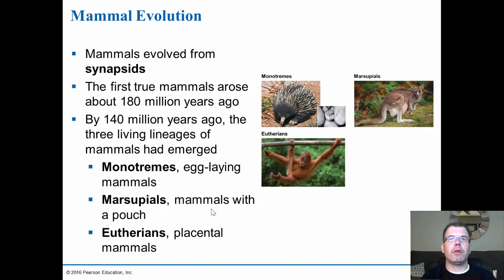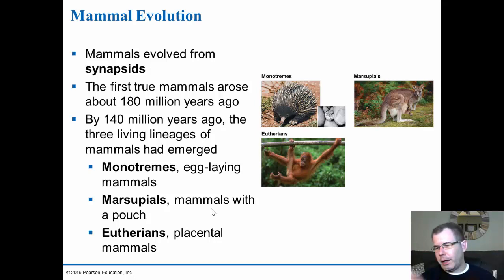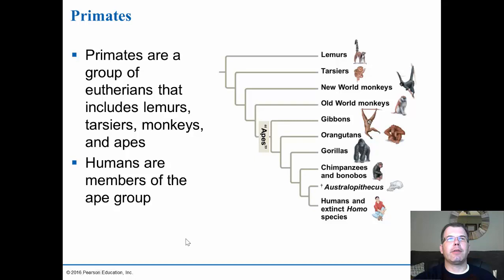Most animals are the eutherians — the placental mammals — which means they have internal fertilization, internal development, and loss of all shells altogether. It's all internal, and they use the placenta from the mother to feed the baby. The only marsupial in the United States is the opossum; most other marsupials are found in Australia.